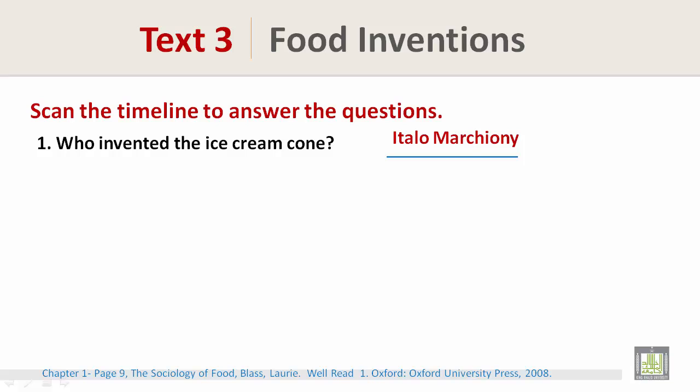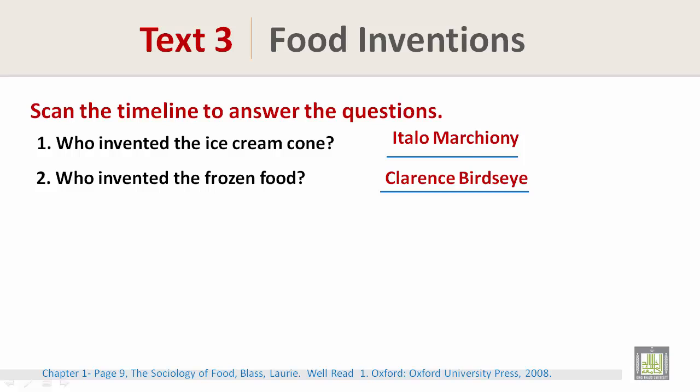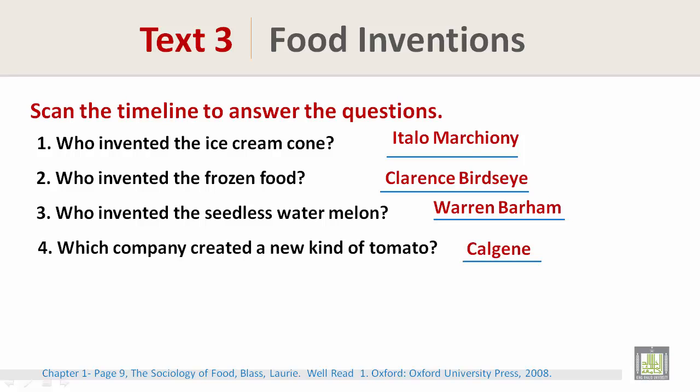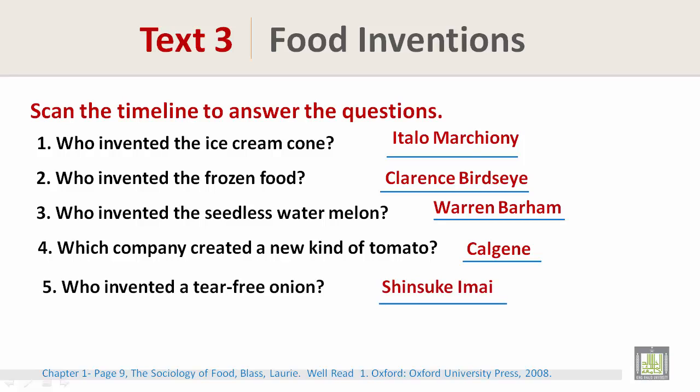Number one: who invented the ice cream cone? That is Italo Marchione. Number two: who invented frozen food? Clarence Birdseye. Number three: who invented the seedless watermelon? That is Warren Barham. Number four: which company created a new kind of tomato? Calgene. Number five: who invented a tear-free onion? That would be Shinsuke Imai.